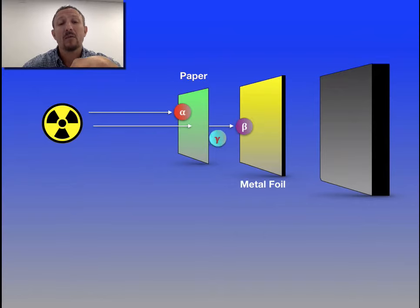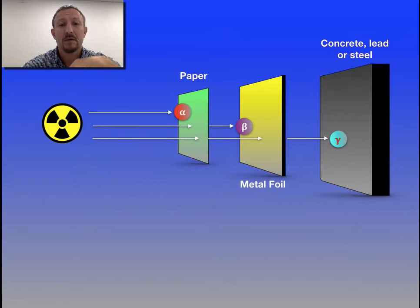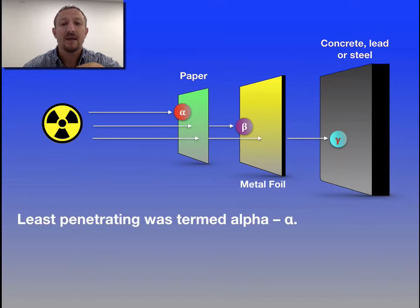And then finally, if we look at gamma, gamma will pass through the paper, the metal foil, but it will be stopped by concrete, lead, or steel. And this is often why radioactive fuel sources, when they've been used up in a nuclear power station, are stored in concrete bunkers or containers to prevent the radiation actually being emitted.